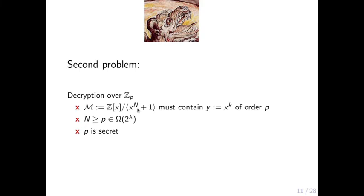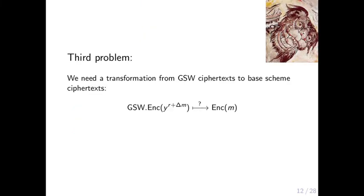The third problem: even if we can perform the reduction mod p in the exponent of y, at the end we still have a GSW encryption of a power of y, and we have to transform this into a base scheme ciphertext encrypting m.